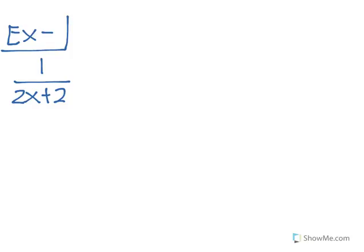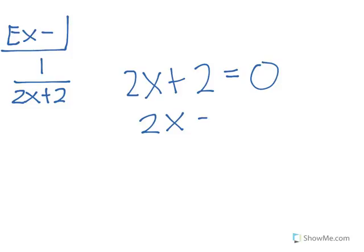For this example we have 1 over 2x plus 2. To find the vertical asymptote, this 2x plus 2, the denominator, has to be equal to 0. So we solve for that. 2x minus the 2, we have negative 2. Then divide the 2 away from the x, we'd have negative 1. For this graph there would be a vertical asymptote at x equals negative 1.